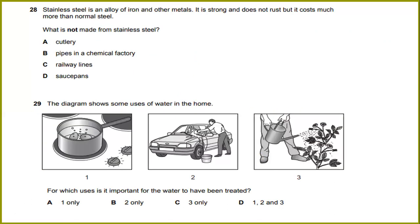Stainless steel is an alloy of iron and other metals. It is strong and does not rust, but it costs much more than normal steel. What is not made from stainless steel? It's railway lines.